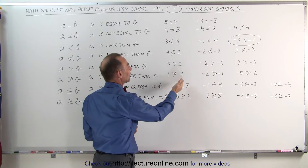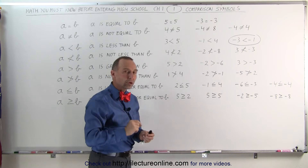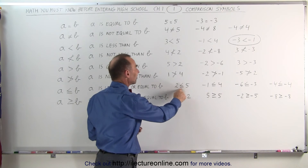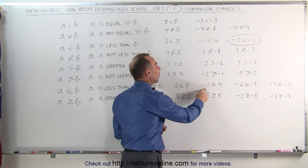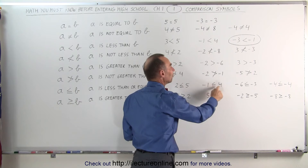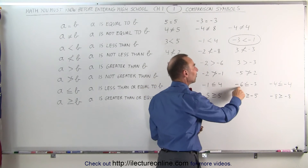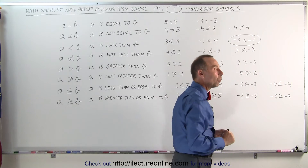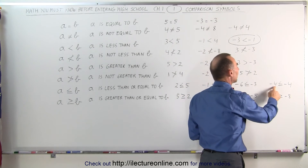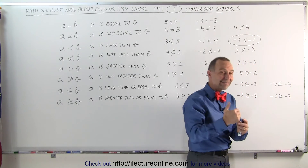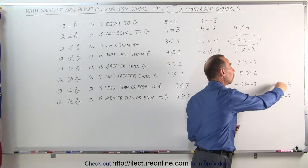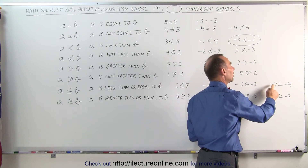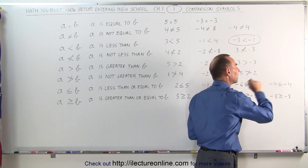If you have a symbol with less than or greater than with a line underneath, that means there is an 'or' condition. Either the number is less than, or the number is equal to the other. Since 2 is less than 5, that statement is true. Negative 1 is less than or equal to 4 — since it's less than 4, that's true. Negative 6 is less than or equal to negative 3 — also true. And negative 4 is less than or equal to negative 4 — even though it's not less than, it is equal, so it meets one of the two conditions and is therefore a true statement.